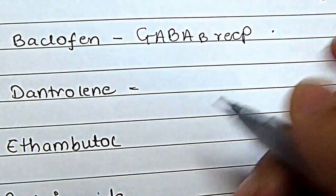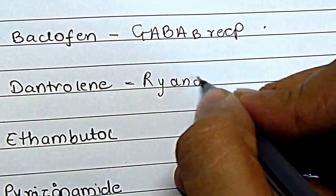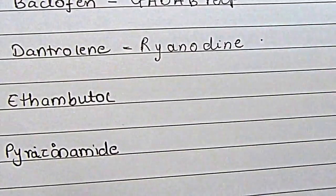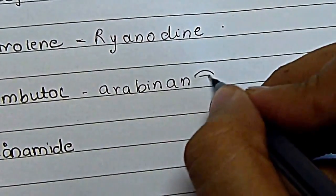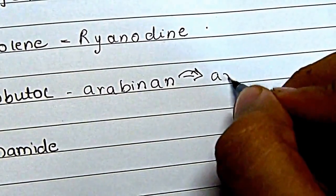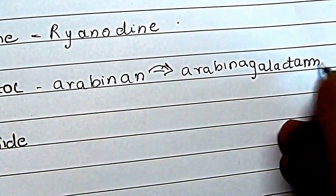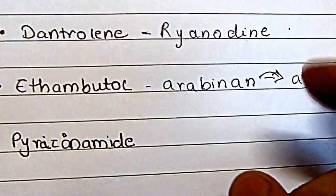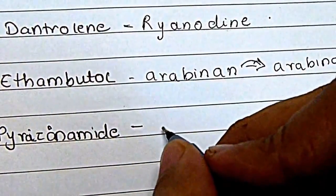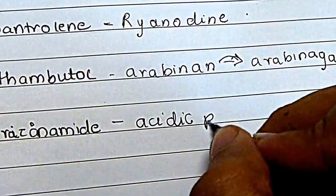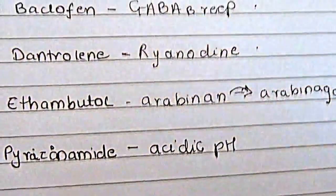For dantrolene, I know it prevents calcium release from the sarcoplasmic reticulum but I keep forgetting which specific receptor it acts on, so I write the receptor down. For ethambutol, I forget the mechanism — it involves conversion of arabinose to arabinogalactan, which I can barely even pronounce. For pyrazinamide, I keep forgetting it's the only anti-tubercular drug that acts in the acidic pH of the phagolysosome.